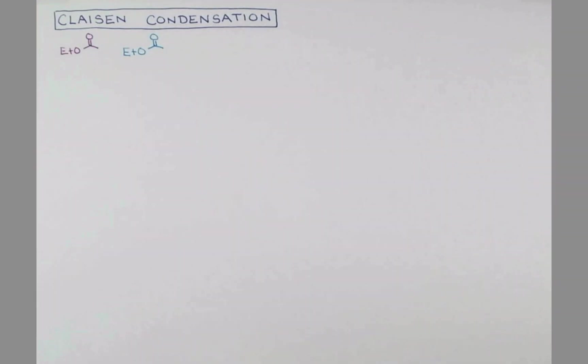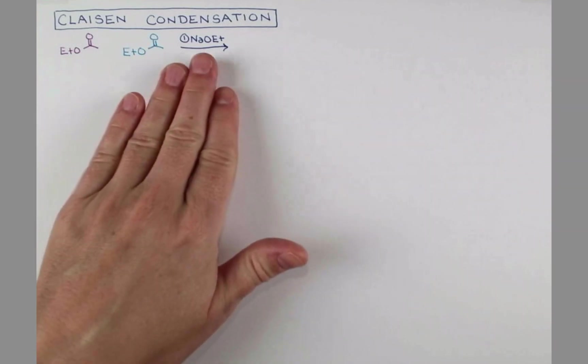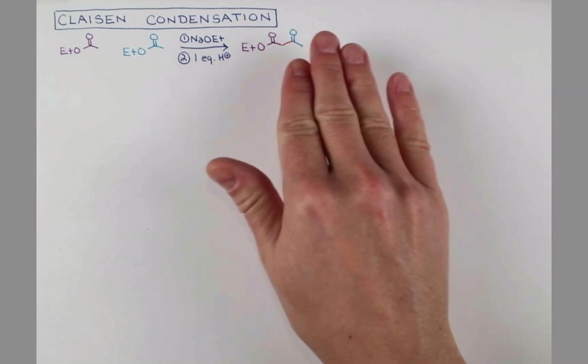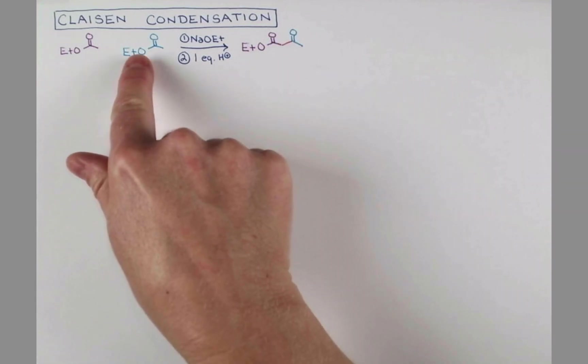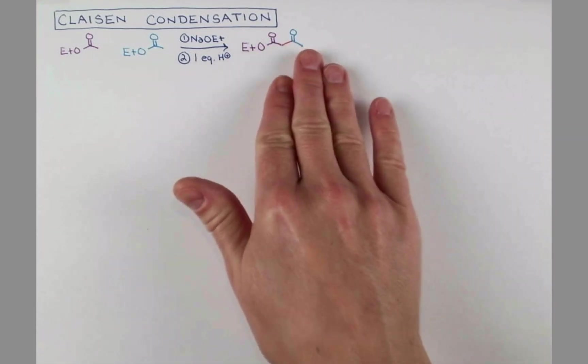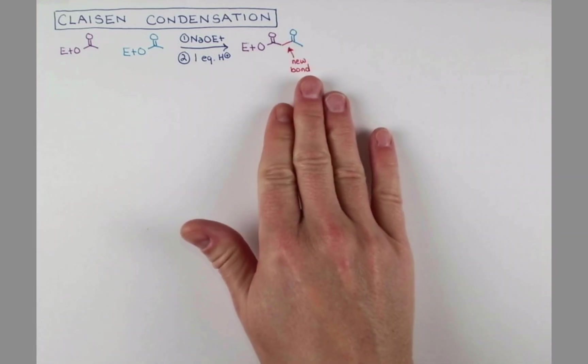When our ester is first treated with a base, here we'll use sodium methoxide, and then treated with one equivalent of acid, we'll form this compound that contains one ester. We can see from the blue side the ester group has been lost. So we get a compound with an ester and a ketone, and our new bond is shown in red.